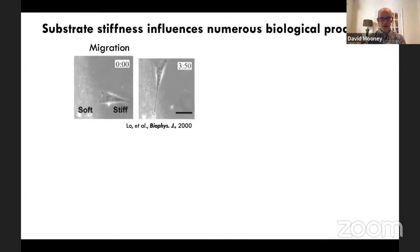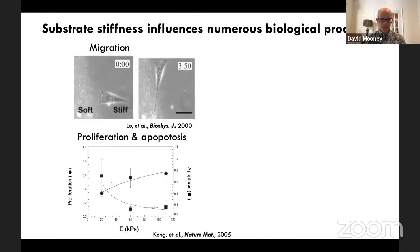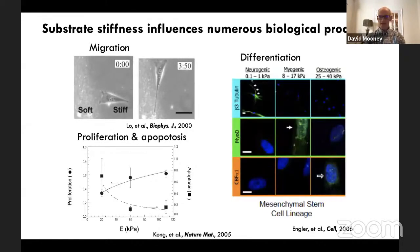A couple of decades ago, researchers first recognized the mechanical dynamics of this interplay. This led to an important question: if cells actively and mechanically probe their environment, does the resistance they feel to their own forces feedback and alter their behavior? A variety of studies demonstrated this was quite important. Yuli Wong's group showed that the migratory ability of cells is regulated by the stiffness of the substrate. Jun Kong demonstrated that proliferation and apoptosis of cells is regulated by substrate stiffness. And Dennis Discher's lab showed that the fate of mesenchymal stem cells — in terms of their differentiation — was regulated by substrate stiffness.